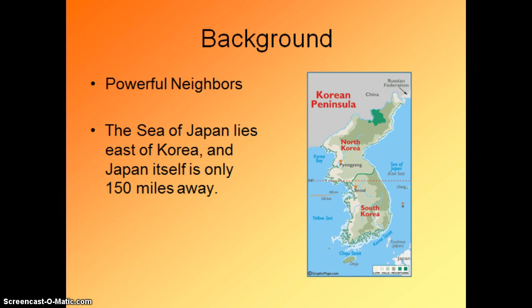The first thing you need to know is where Korea is located — it's in Asia. Here is China. Korea is a peninsula off of China, and it's very close to Japan, about 150 miles away. It's surrounded by China and then the Soviet Union to the north — very powerful neighbors.